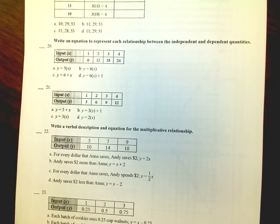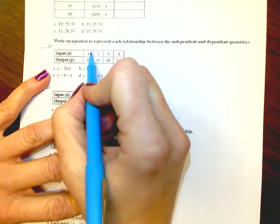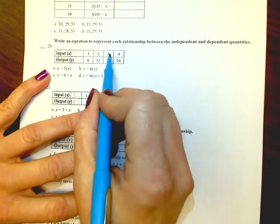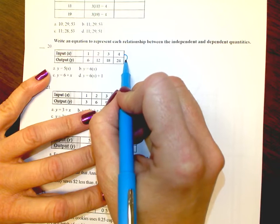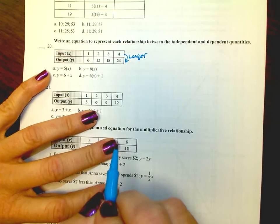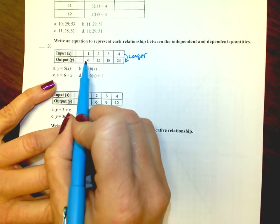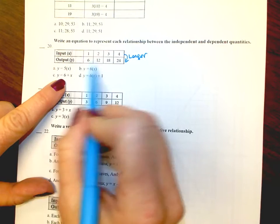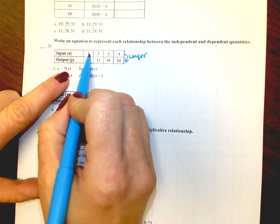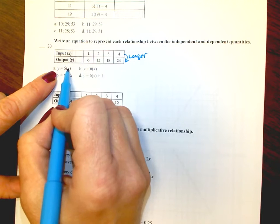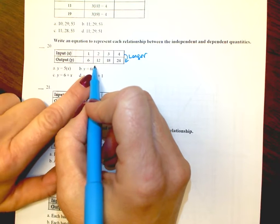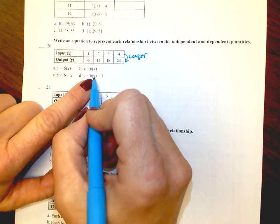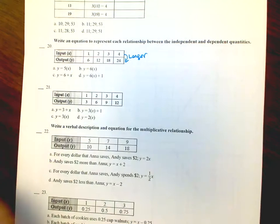Number 20: Write an equation for the relationship — 1 gets to 6, 2 gets to 12, 3 gets to 18. We're getting larger, so eliminate subtraction and division. Substitute your x into each answer choice and see if you get your y. Try it on all of them, because sometimes an equation works on one or two but not all.